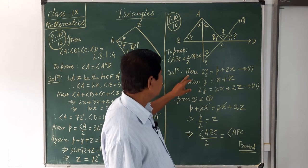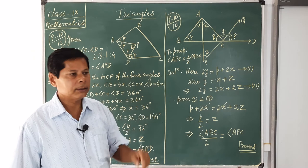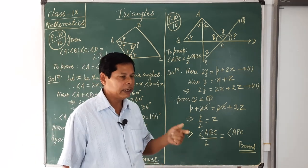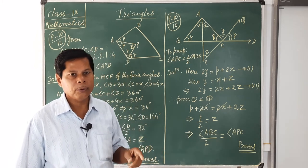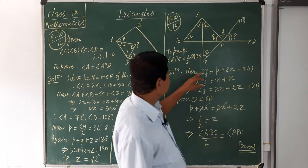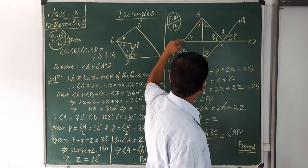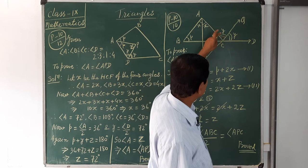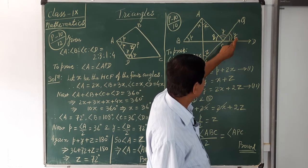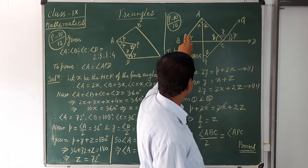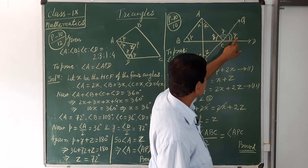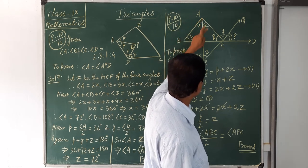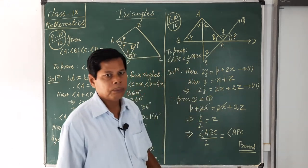Here we use theorem 2: if one side of a triangle is produced, then the exterior angle formed equals the sum of its two opposite interior angles. In triangle ABC where side BC is produced, the whole exterior angle ACD = 2y equals the sum of complete angle A and complete angle B, i.e., 2y = p + 2x. This is by theorem 2.